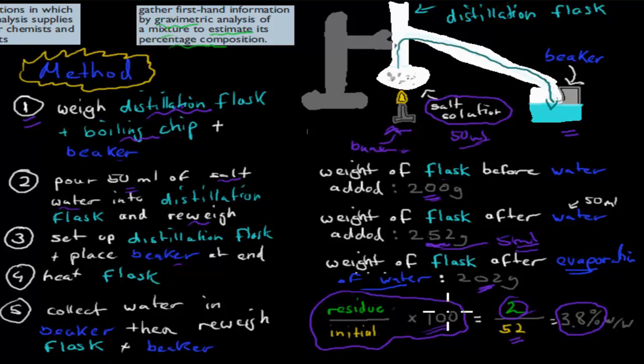What that means is the actual salt is 3.8% of our weight over the whole solution. And we can use that for this kind of example, but we can also use it for a lot of other things. For example, if we want to check out pollution, we can see what kind of stuff is in our water, or at least how much it weighs. So this kind of procedure, we don't just use for salt and solution. We use it for lots of different things.